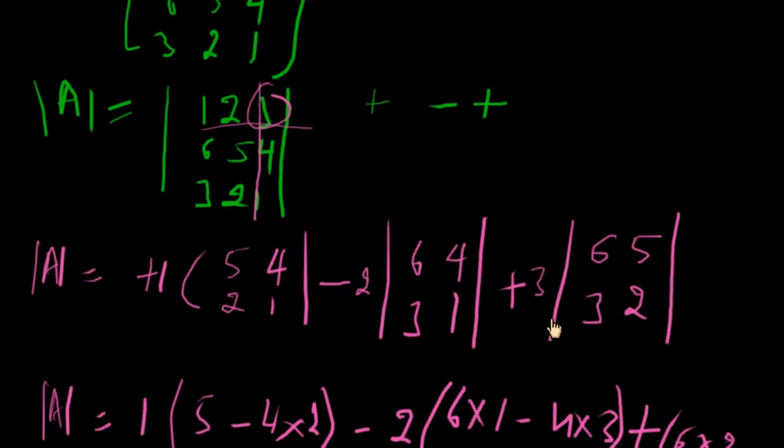And last is plus 3. Multiply with its minor: 6, 3, 5, 2.